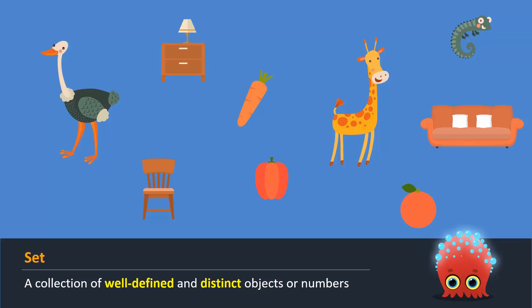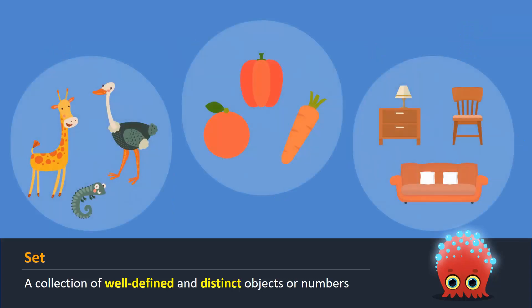Some are animals, some are food, and some are furniture. If we place each object into its own group, we end up with three sets of objects.